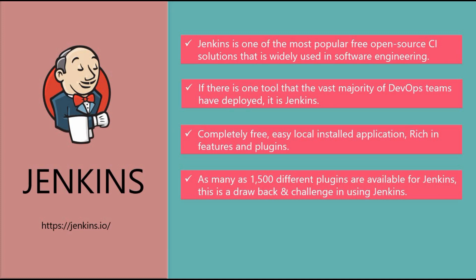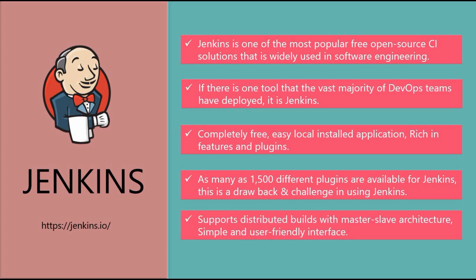However, the large number of plugins in Jenkins is also a drawback — it's a big challenge to manage all these plugins as you keep adding more and more. Jenkins also supports distributed builds with a master-slave architecture and has a simple, user-friendly interface. That's why Jenkins is one of the most widely deployed CI tools, though its usage may have come down a little because many enterprise tools and GitLab have come up in the market.